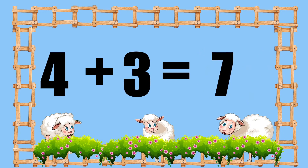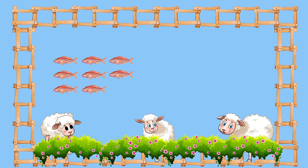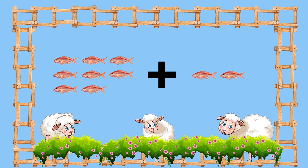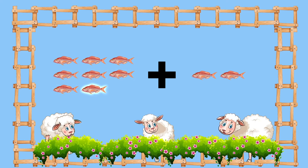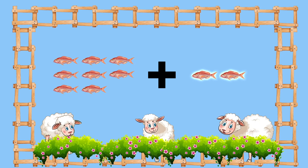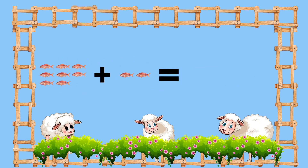Similarly, here are eight fishes and here are two fishes. Let's add them: one, two, three, four, five, six, seven, eight, nine, ten. So eight fishes plus two fishes equals to ten fishes.